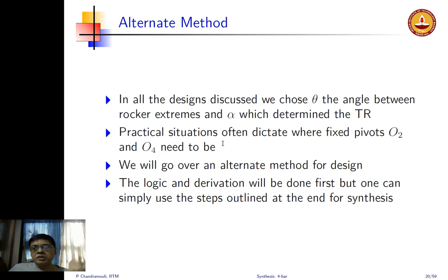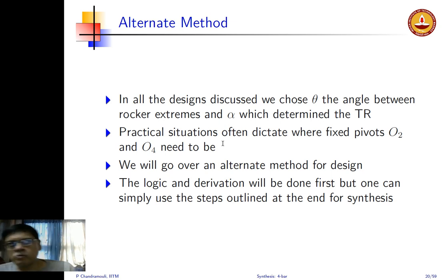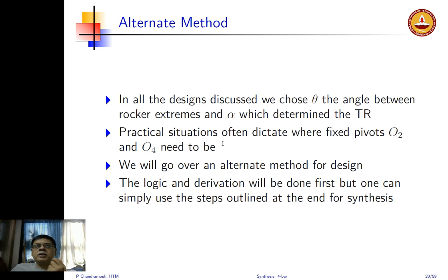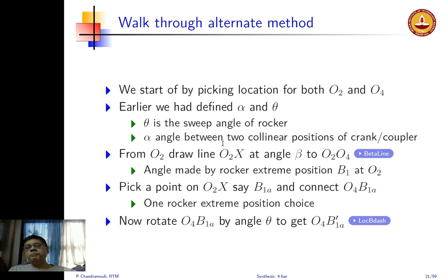We will use the same rocker extreme angle theta of 70 degrees and alpha — the angle between the two collinear positions — of about 40.8 degrees. We will go over the logic and derivation for the design procedure. The design steps are basically four or five and very quick to execute, but we are going to derive why we do it in that particular way in a very general fashion. So we start by picking O2 and O4.